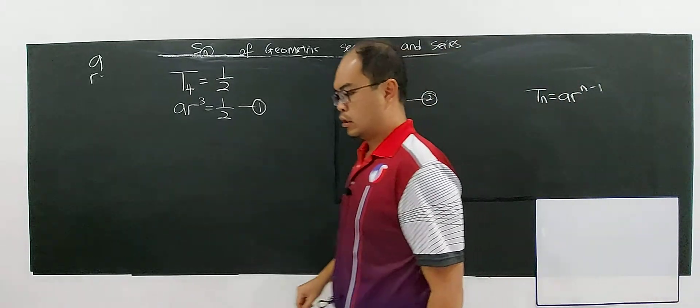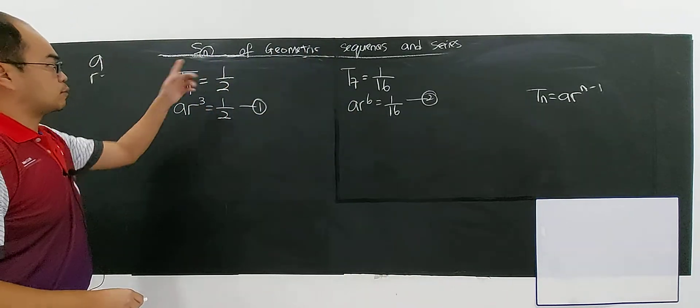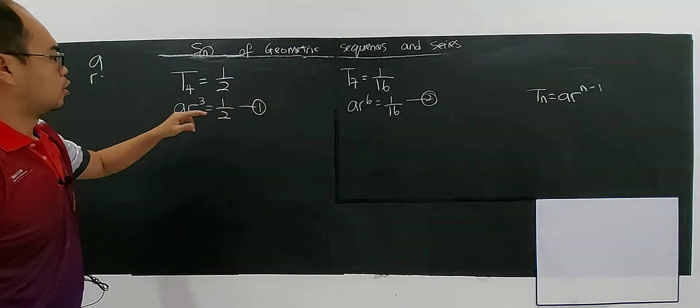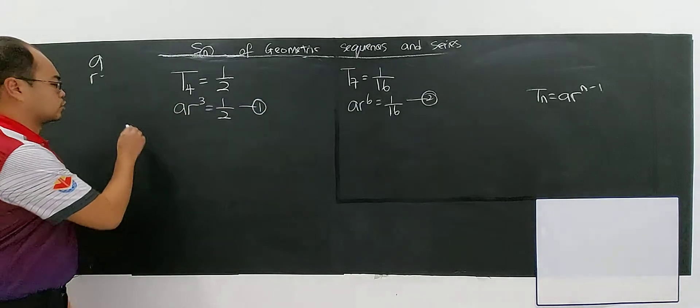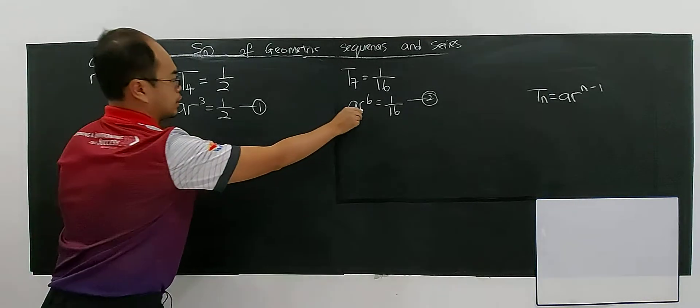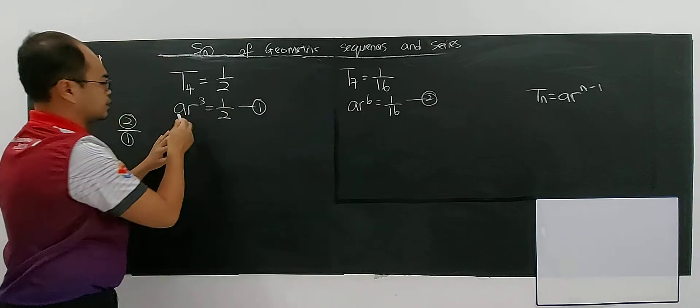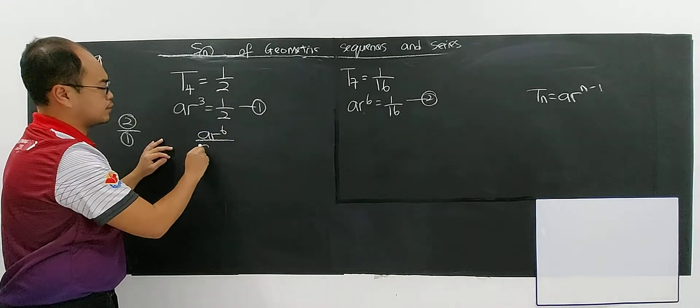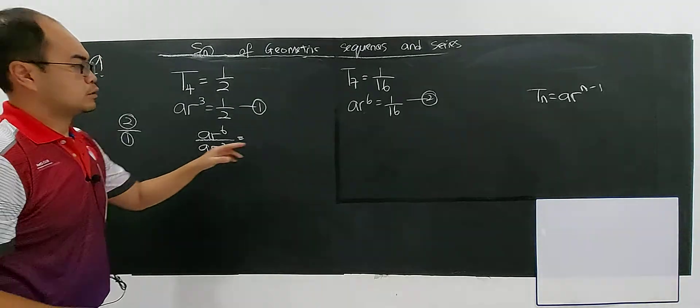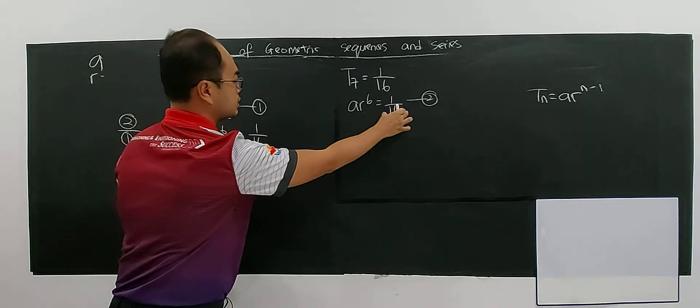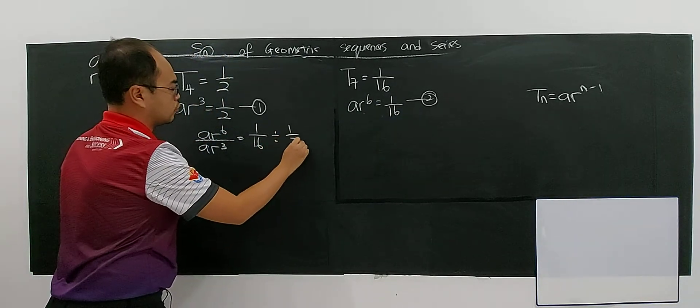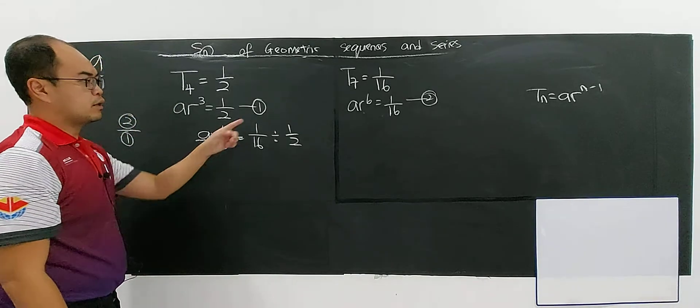Alright. So it's now using division. For geometric sequence we're using division. So you either take 1 divided by 2 or 2 divided by 1. Either one is okay. I will take 2 divided by 1. So I will take AR, the left hand side divided by the left hand side, means that AR power of 6 divided by AR power of 3. So 1 over 16 divided by 1 over 2.